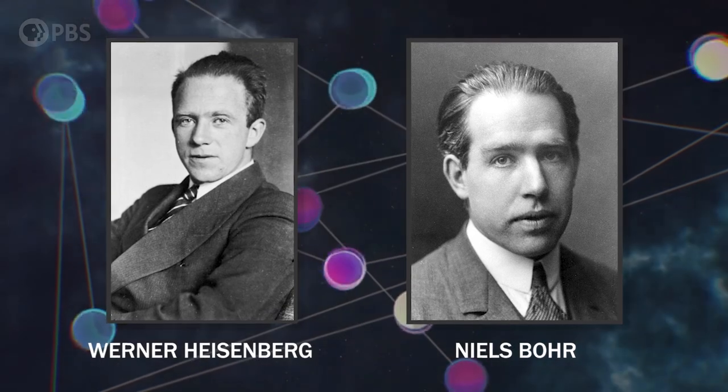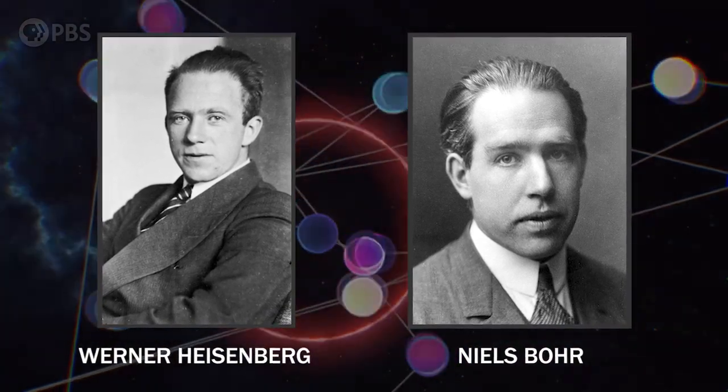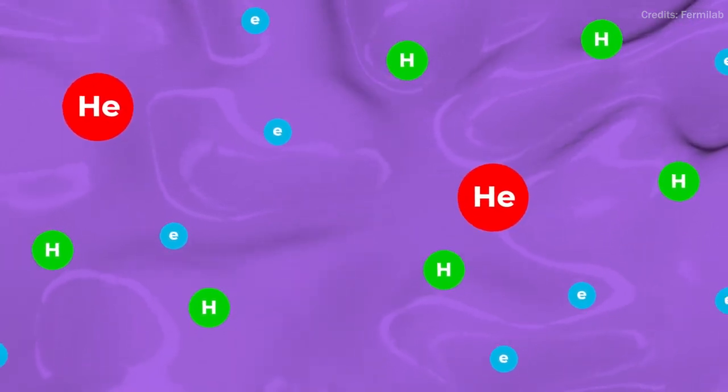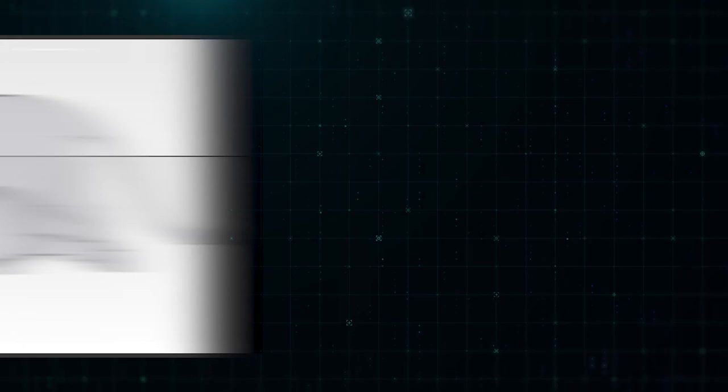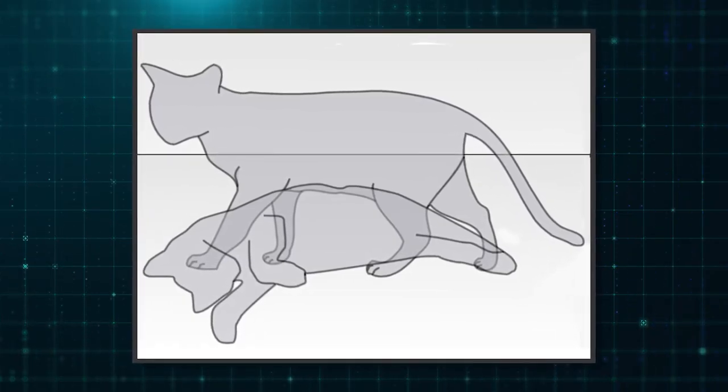Niels Bohr and Werner Heisenberg, physicists, developed the Copenhagen interpretation in the 1920s, arguing that a particle does not have material existence until it is measured by observation. This rings a bell, right? Schrödinger's cat? Well, we're getting to it. So the Copenhagen interpretation was essentially a fudge, and many found it unsatisfactory.